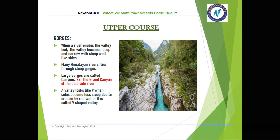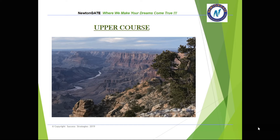When a river erodes a valley bed, the valley becomes deep and narrow with steep wall-like sides — this is called a gorge. Many Himalayan rivers flow through steep gorges. Large gorges are called canyons; an example is the Grand Canyon of the Colorado River. A valley looks like a V when the sides become less steep due to erosion by rainwater — it is also called a V-shaped valley. Can you identify the name of the great canyon in the picture? Do write it down in the comment section.